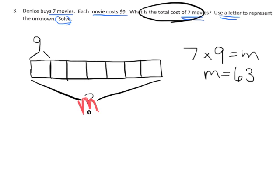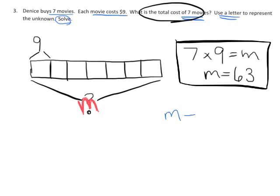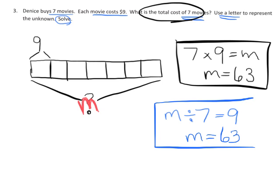Another way we could have written it, another equation, we could have written M divided by 7 is equal to 9. We could have said, well, M dollars, our total, divided by 7 movies, is equal to $9 per movie. So, we could have written it this way. I think this one would have been less common for students. But there we go. We have two ways we could have written the problem, as a multiplication or as a division. But in both cases, we get the answer of 63.